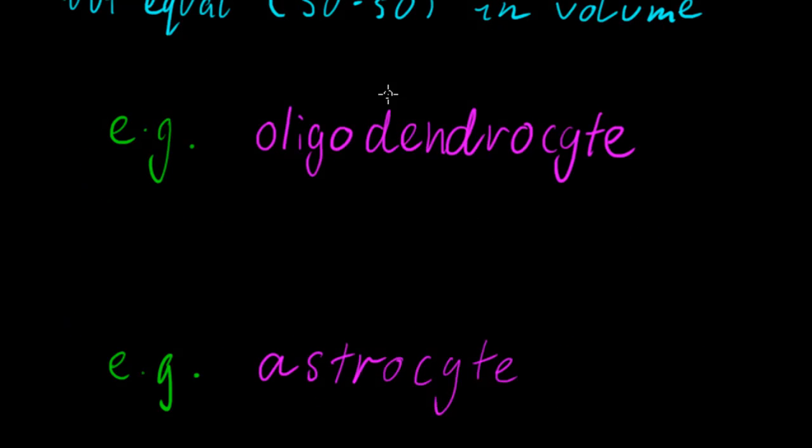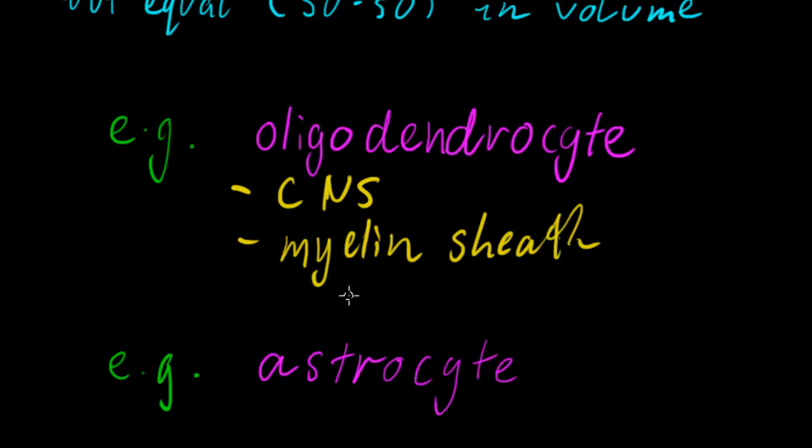I'm going to run through some examples here. Oligodendrocytes, which hopefully you remember from part one, are in the CNS and provide myelin sheath. These can provide myelin sheath for up to 40 axons.